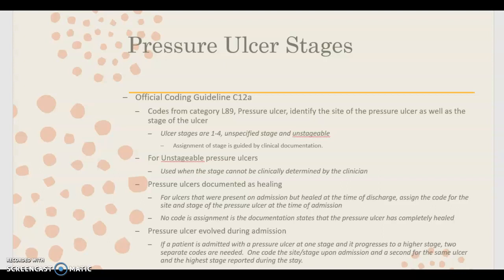Now let's talk about the coding guidelines specific to pressure ulcer stages. It's very important as a coder that you're aware of these. These come directly from the official coding guidelines, chapter 12, section A. Codes from category L89, which is the pressure ulcer codes, identify the site of the pressure ulcer as well as the stage. The documentation tells us the stage and the site. The stages are either stage 1, 2, 3, or 4. We can also code an unspecified stage or unstageable. Remember, we use our clinical documentation to identify the stage — the coder cannot determine the stage independently.